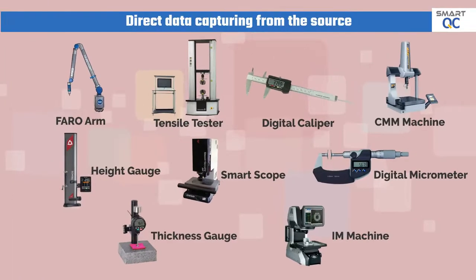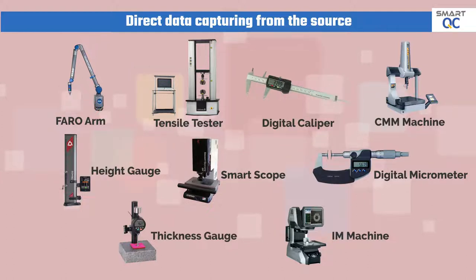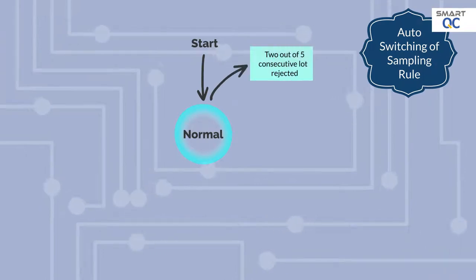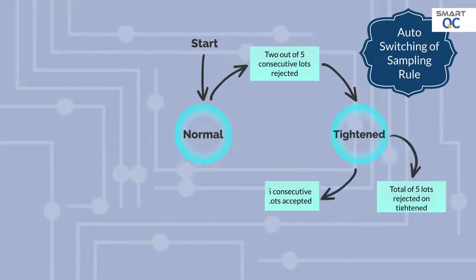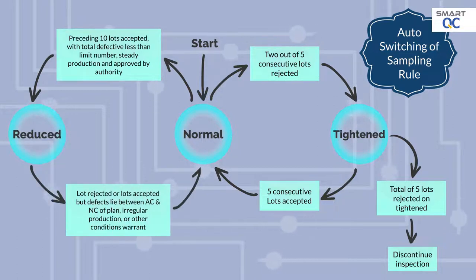In order to eliminate manual data entry, Smart QC is designed to capture measurement data from the source. It has the capability to capture data from tensile tester, digital caliper, micrometer, CMM machine, smart scope, etc. Smart QC has a built-in power function which can perform auto-switching of the sampling plan based on ongoing quality performance. This will eliminate the manual switching process which is prone to human error.